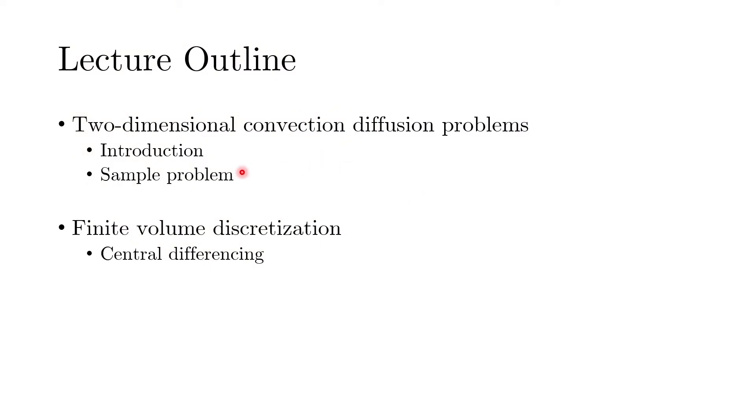So far we have looked at the one-dimensional variant of the convection diffusion equation. We looked at three or four different kinds of schemes: central differencing, upwind, and QUICK schemes, and we saw that some schemes have advantages and disadvantages accordingly. Now we want to take this discussion further and implement multi-directional problems. Today we are going to talk about two-dimensional convection diffusion phenomena.